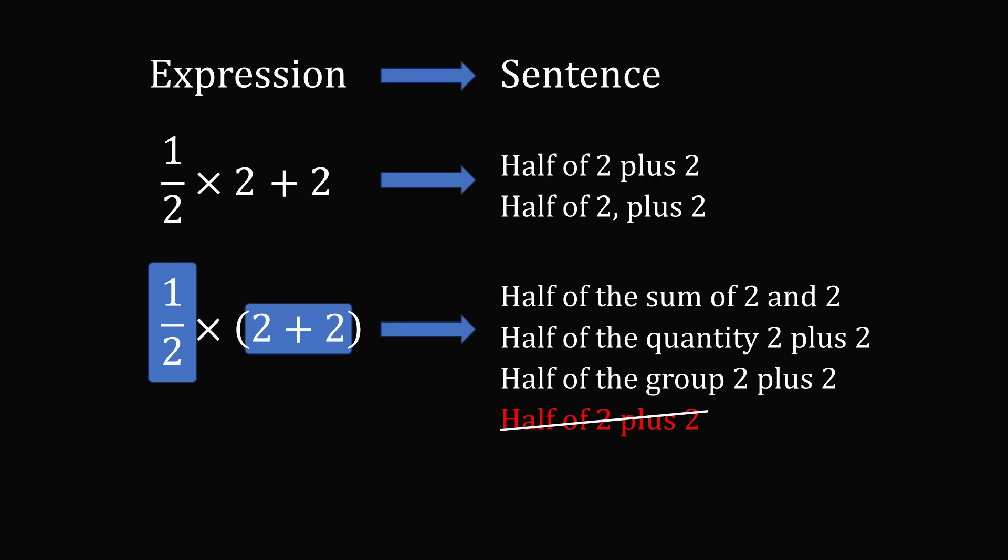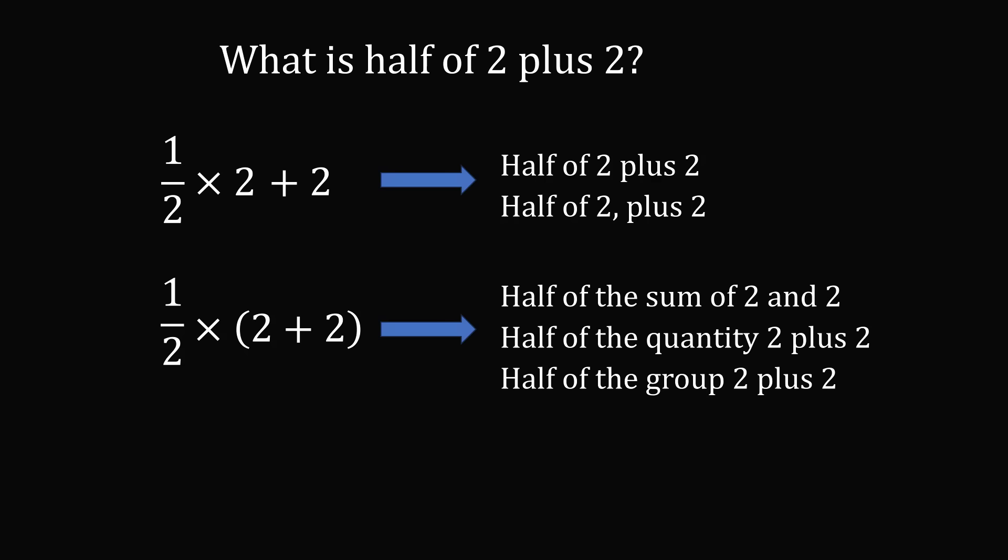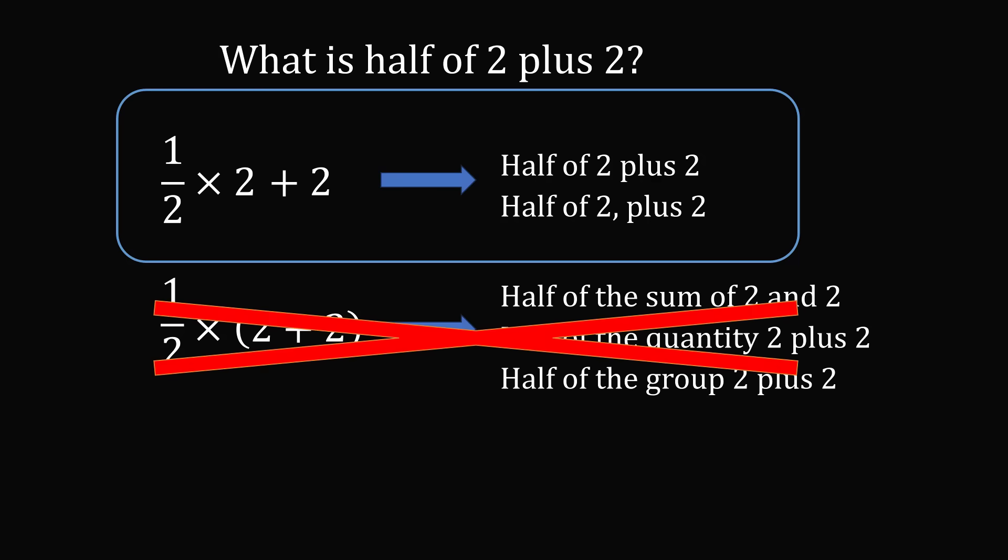This would be a discouraged practice, because it doesn't indicate that you're taking the sum of 2 and 2 first, and then you're taking half of that. So I would suggest that no one is translating the second sentence into the sentence, half of 2 plus 2. So from my perspective, what is half of 2 plus 2 more accurately would correspond to the first expression. I don't think anyone could reasonably translate the second sentence into the sentence, half of 2 plus 2. So I would say the first expression is more literally correct, and I would say 3 is the correct answer.